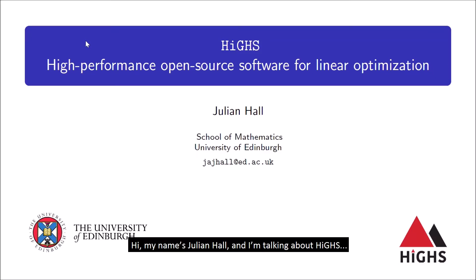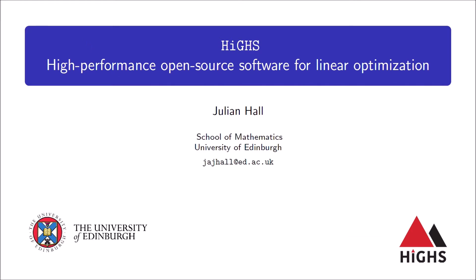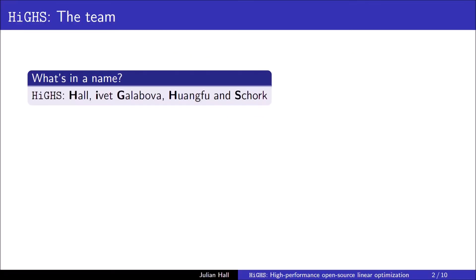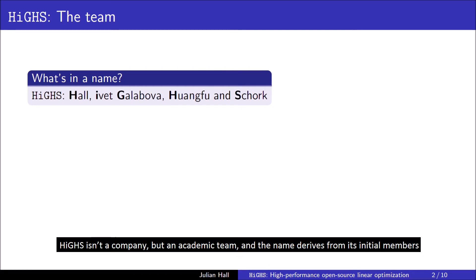Hi, my name is Julian Hall and I'm talking about HISE, which is high performance open source software for linear optimisation. HISE isn't a company, but an academic team, and the name derives from its initial members.